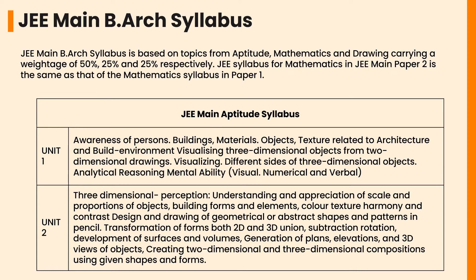Topics in Unit 1 of the JEE Main Aptitude syllabus include awareness of persons, building materials, objects, texture related to architecture and the built environment, and visualizing three-dimensional objects from two-dimensional drawings. Unit 2 topics include three-dimensional perceptions, understanding and appreciation of scale and proportions of objects, building forms and elements, color, texture, harmony and contrast, and design and drawing of geometrical or abstract shapes and patterns in pencil.